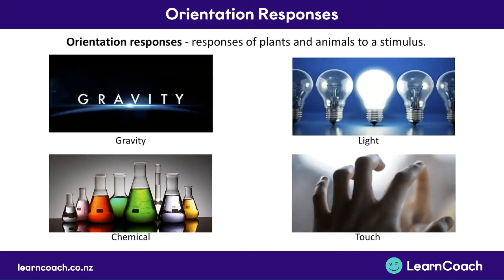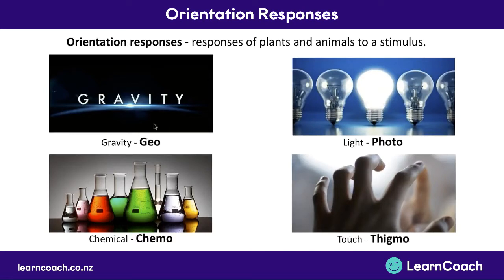For each of these four things you're going to need to learn the biological term for it. We use a prefix to describe each stimulus. For gravity we use 'geo', for light 'photo', for chemical 'chemo', and for touch 'thigmo'.